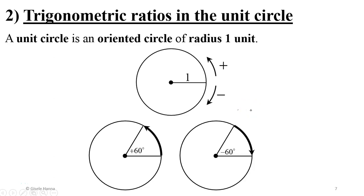In this part of our lesson we're going to discuss trigonometric ratios in the unit circle. To begin, we'll start by defining what a unit circle is. By definition, a unit circle is an oriented circle of radius 1 unit — this is why it's called a unit circle.